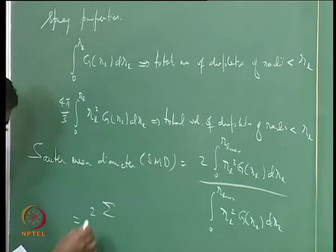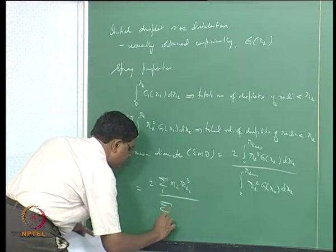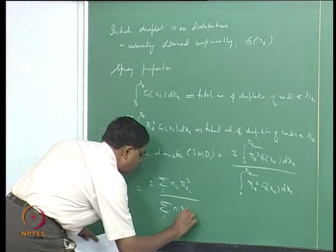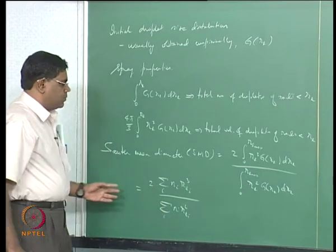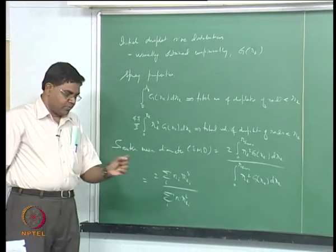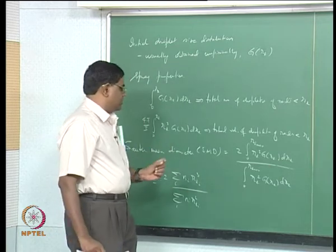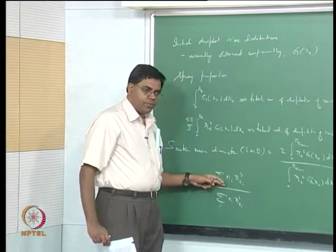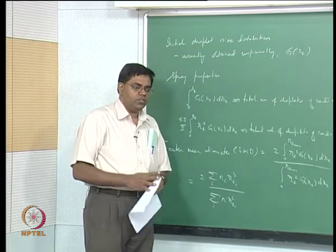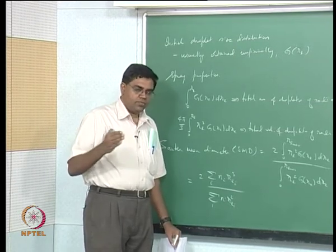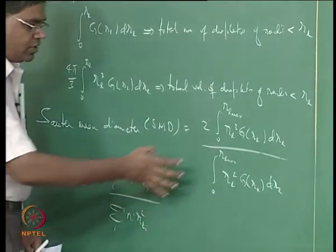There is another way to define SMD that may be more familiar: twice of Σ(n_i R_L_i³) divided by Σ(n_i R_L_i²). This is more familiarly used because typically we have a bunch of droplets, size them into bins of certain elemental radius, count the number of droplets in each bin (that is n_i), and get a histogram. If the bin size is very small — meaning you are counting a large number of droplets over higher resolution of radii — this can become an integral.